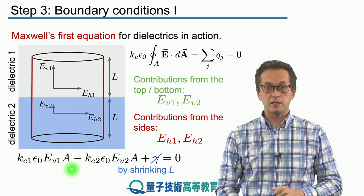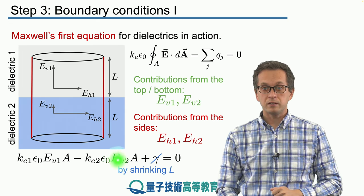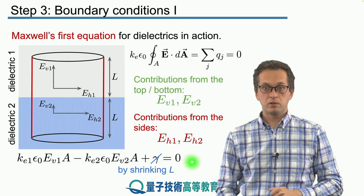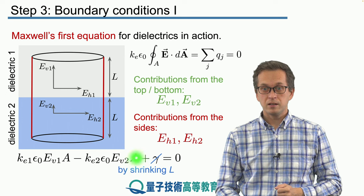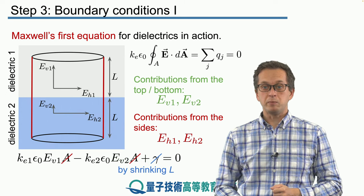So we will get that this first term minus the second term has to be equal to zero. We can simplify further: we can divide by A, we can divide by epsilon naught.